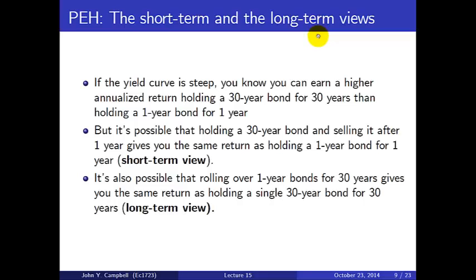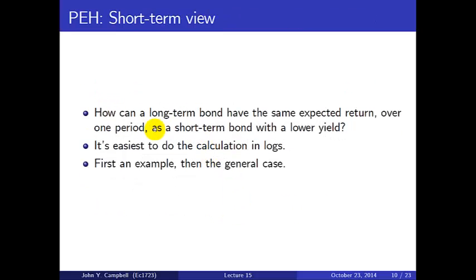There are several views of the pure expectations hypothesis. The short-term view: holding a 30-year bond and selling it after one year gives the same return as holding a one-year bond for one year. The long-term view: rolling over one-year bonds for 30 years gives the same return as holding a single 30-year bond for its full 30-year lifetime. Let's work through each. How is it possible that a long-term bond can have the same expected return over one period as a short-term bond with a lower yield? It's easiest to think through in logs — first an example, then the general case.